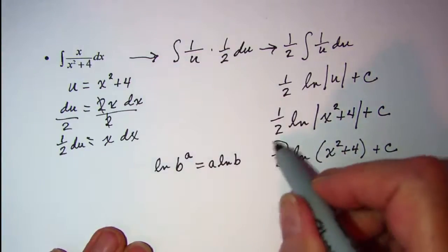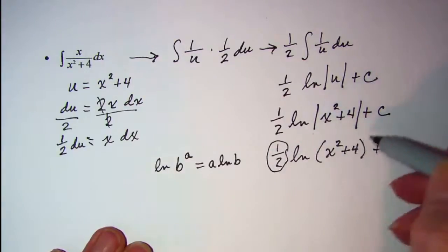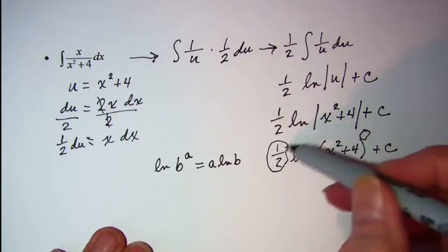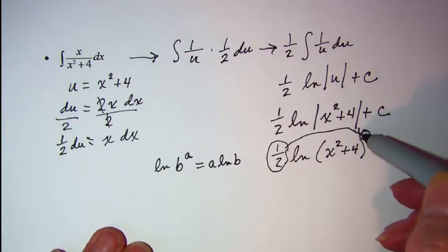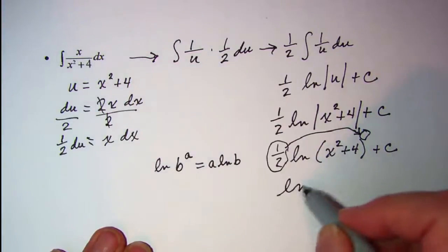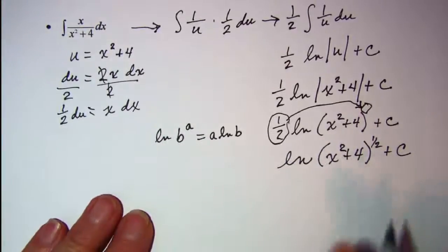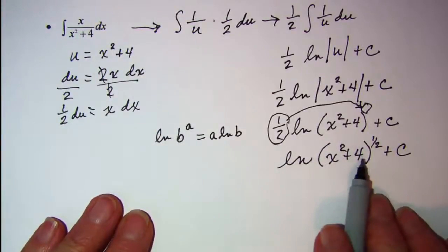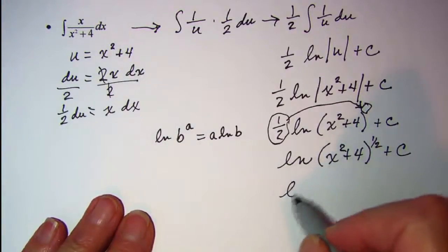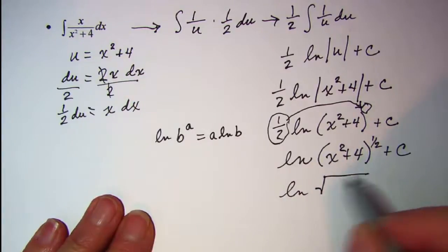So I'm going to take this up here as the exponent on my argument. And so I have ln of x squared plus 4 raised to the 1 half plus c, and that we could write as the square root. So ln square root of x squared plus 4 plus a constant.